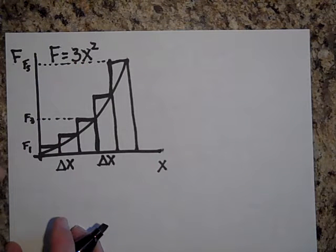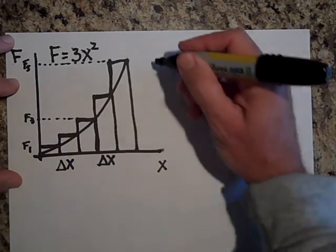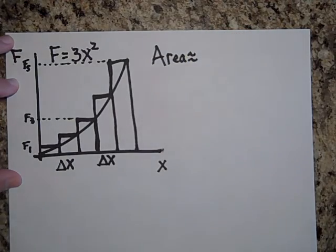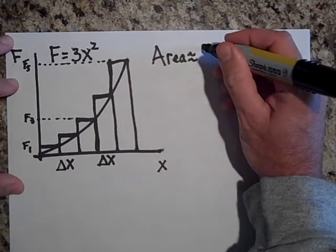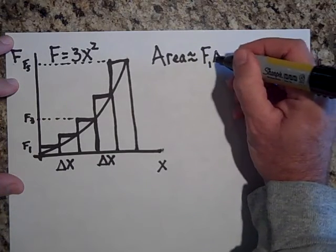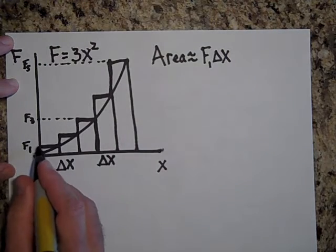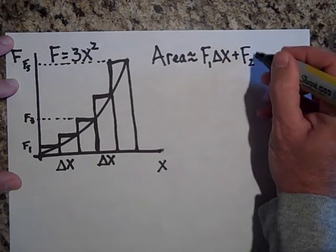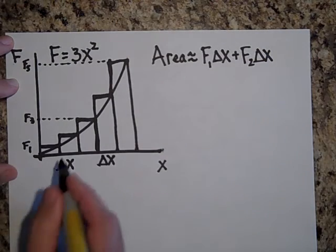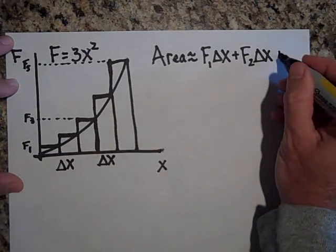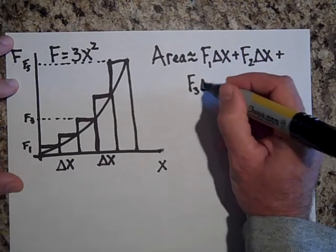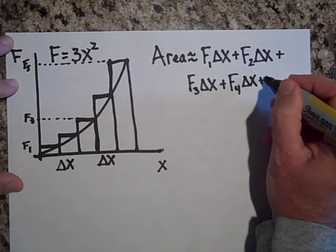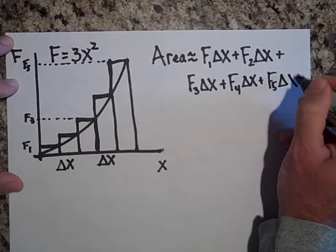If I want to approximate the area, the area is approximately just F1 times delta x, that would be this height right here times delta x, so that's the area of that rectangle, plus F2 times delta x, that would be the area of this rectangle, plus F3 times delta x, plus F4 times delta x, plus F5 times delta x.